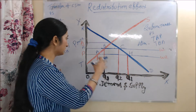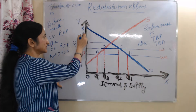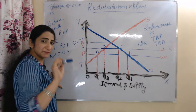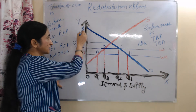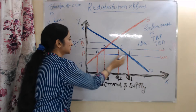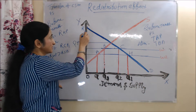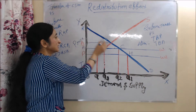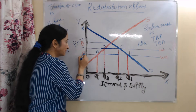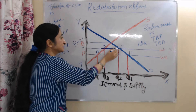Here you can see that before imposing tariff, consumer surplus was RHP. But after imposing tariff, consumer surplus is RCP1. RHP is more than RCP1, so we can say that after imposing tariff, consumer surplus falls.